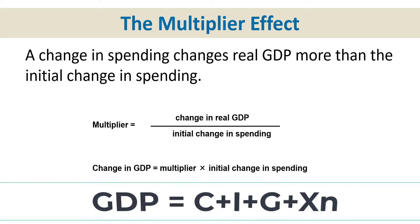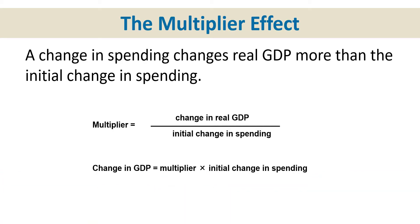So let's say the government decides to spend more — they're going to increase the G in GDP. Let's say the government decides to build more schools and increase the infrastructure. When that G increases, GDP is going to increase. That's not shocking. Here's what's happening in the background though.